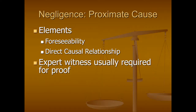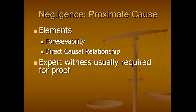The third element of a negligence claim is proximate cause — a legal term that basically means there needs to be a close enough causal relationship between the breach of duty by the doctor and the damages caused by that mistake. It needs to be foreseeable that when that mistake is made it will cause this type of damage, and there needs to be a direct causal relationship between the breach of duty and the damages that occur. Again, just like breach of duty, this element will usually require testimony from an expert witness. Because of the expense of those expert witnesses, many veterinary malpractice claims never get filed because there's simply not enough money involved to make it worth the attorney's time. In the next video, we'll talk about the last element for negligence claims — the damages and how they are valued.